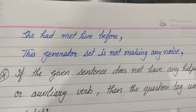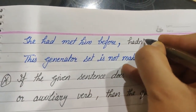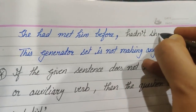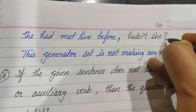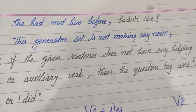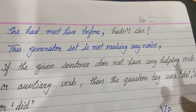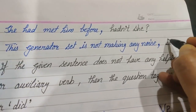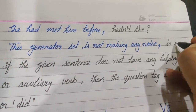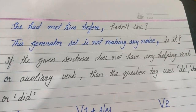'She had met him before.' 'Had' changes into 'hadn't,' and the pronoun is 'she,' so the answer becomes: hadn't she? Next: 'This generator set is not making any noise.' It's a negative statement, so the tag becomes positive. The helping verb is 'is,' and for 'generator set' we use 'it.' So the answer becomes: is it?